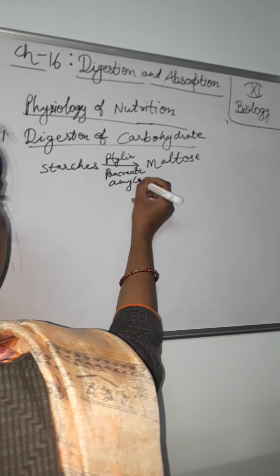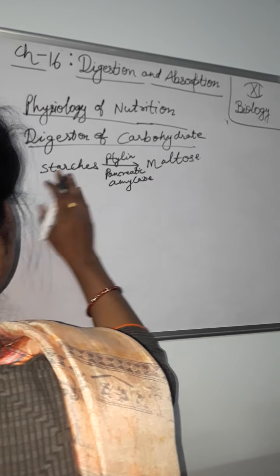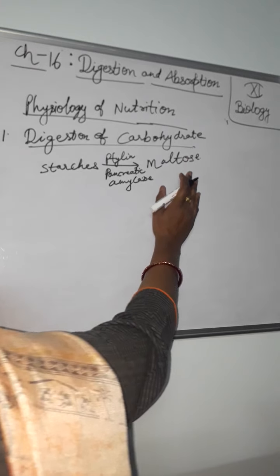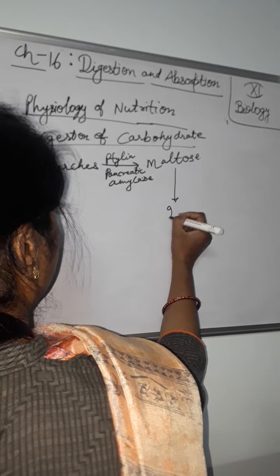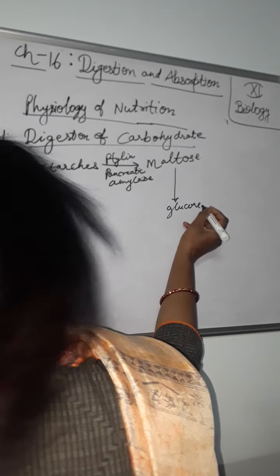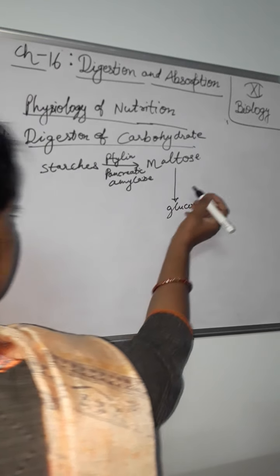Pancreatic amylase. Amylase kya karega - starches ko convert karega maltose me and now maltose converts into the monosaccharide that is glucose with the help of maltase enzyme.